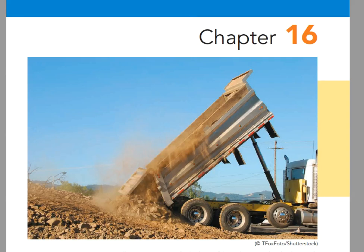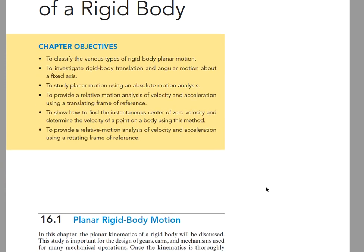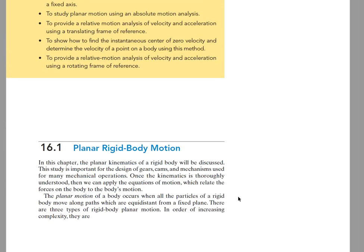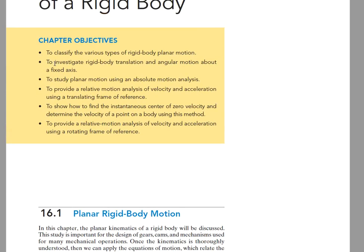This is a new chapter, Chapter 16, on kinematics of a rigid body. We're going to talk about systems of interconnected bodies in two dimensions — planar kinematics of a rigid body. This is an important subject because in engineering there are many systems like gear transmissions and mechanisms that operate in a plane or in parallel planes. For this lecture we'll look at classification of various types of planar motion, translation and rotation about a fixed axis, and then absolute motion analysis.